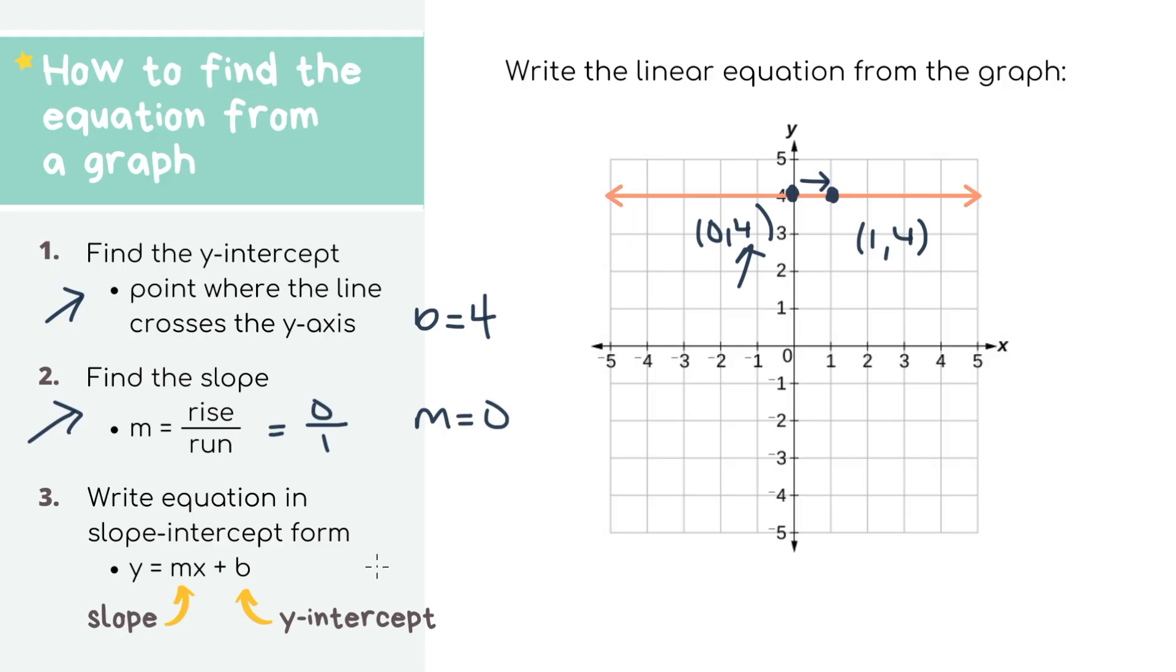Step three, let's plug these numbers in. We have y equals our slope, which is 0, times x, plus our y-intercept, which is 4. Cleaned up, this equation is really just y equals 4, like we talked about before.